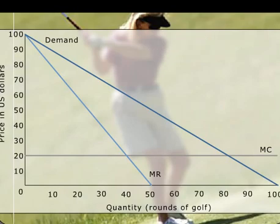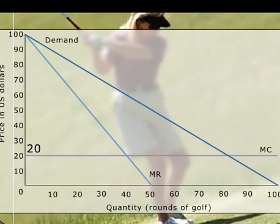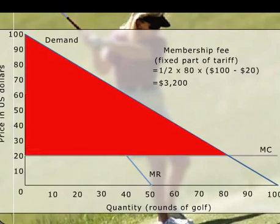The answer lies in the diagram. By setting the green fee equal to its MC, the course supplies the maximum number of rounds that make economic sense. Furthermore, by setting the membership fee equal to the total consumer surplus from purchasing 80 rounds of golf, the course can capture the profits that it would have had, plus the two additional sources of consumer surplus.